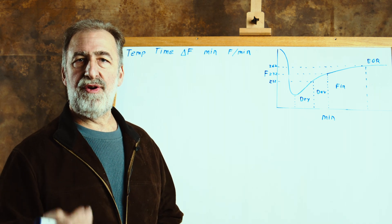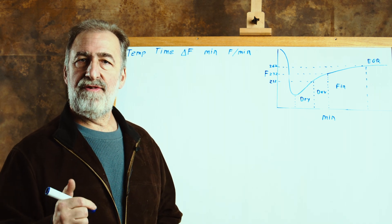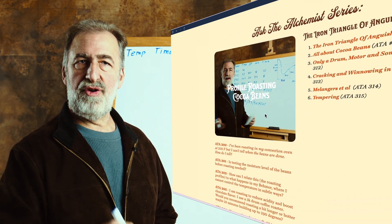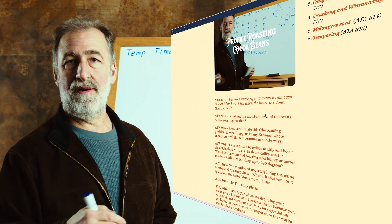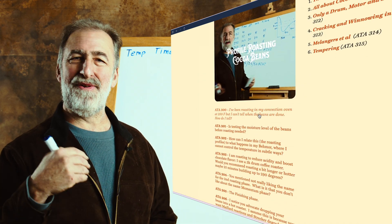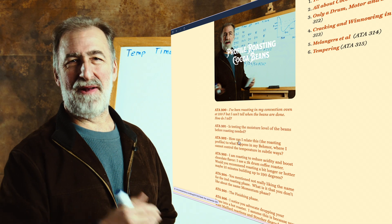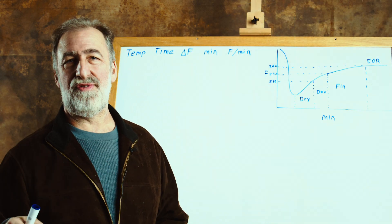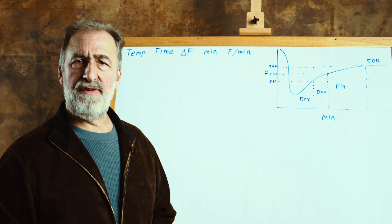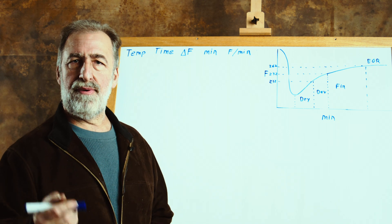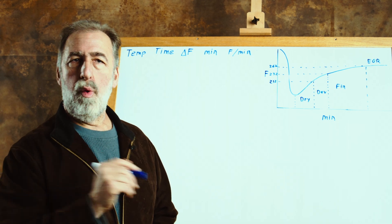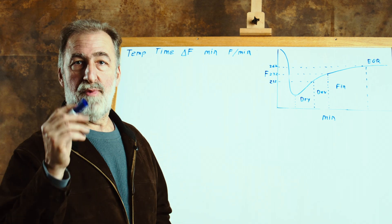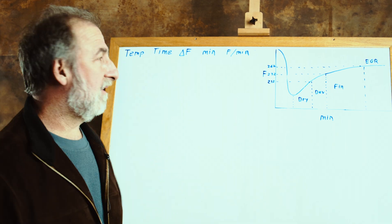If you haven't had the opportunity to go back and read Ask the Alchemist 200 through 206, where I go into nauseating detail about all of this — and you may want to do that, it's 200 through 206 — this will give you a bit of a primer on what those strings of numbers look like. So without further ado, I want to jump into it.